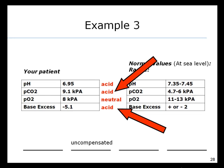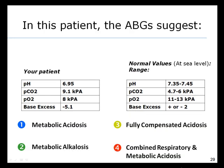So now let's consider this question. In this patient, the arterial blood gases suggest: 1. Metabolic acidosis, 2. Metabolic alkalosis, 3. Fully compensated acidosis, or 4. Combined respiratory and metabolic acidosis. Take a few seconds to make a decision and commit by writing down the answer.